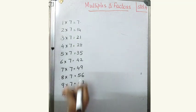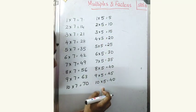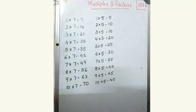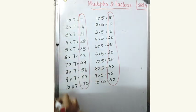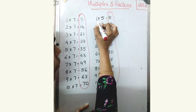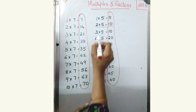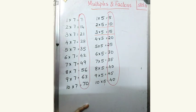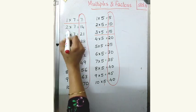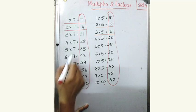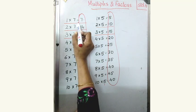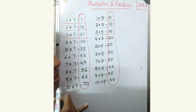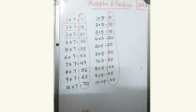Today we will study more about multiples. Look here. This is the multiplication table of 5 and these are the multiples of 5. These are the multiples of 7. The 1st multiple means 5 multiplied by 1. The 2nd multiple means 5 multiplied by 2. The 3rd multiple means 5 multiplied by 3. Look here: 1st multiple of 7 is 7. 2nd multiple of 7 is 2 into 7, which is 14. 3rd multiple means 3 into 7, which is 21. These are the first 3 multiples.